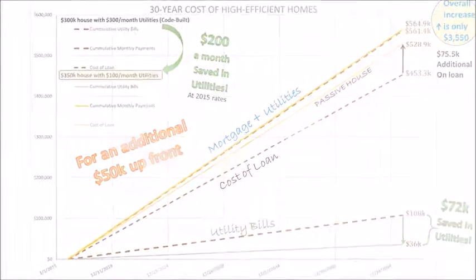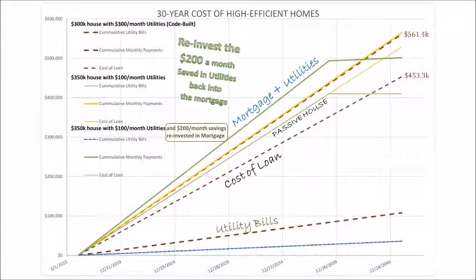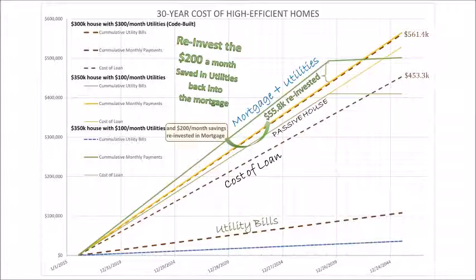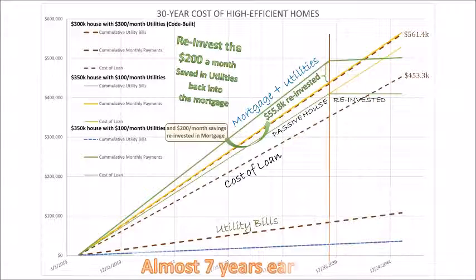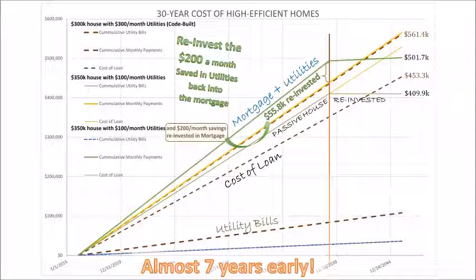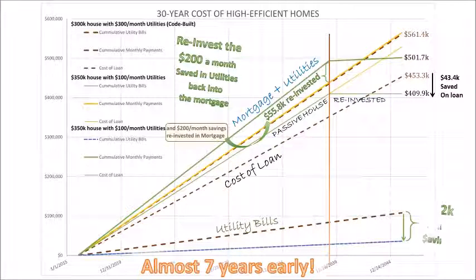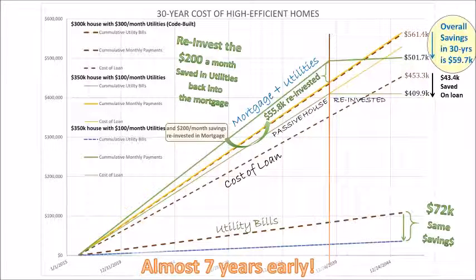Let's talk about reinvesting that $200 a month into your mortgage. You end up putting $55,000 into your mortgage by doing that because you've reinvested. But look what that does — it cuts your mortgage down by seven years. So your numbers cap off. You have $410,000 for your loan, a decrease of $43,000. You have the same $72,000 savings in operations, so at the end of the day you have savings of almost $60,000.